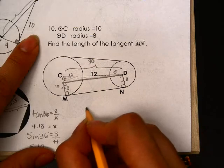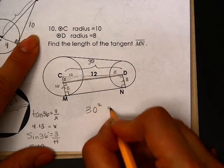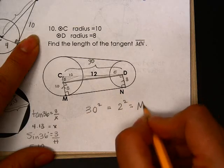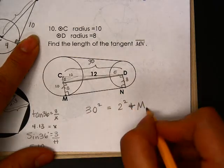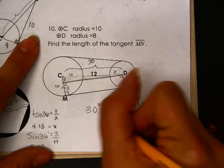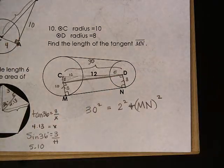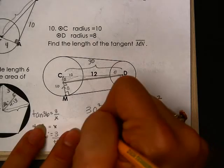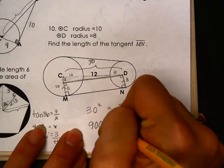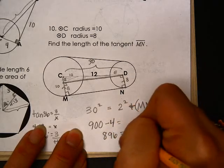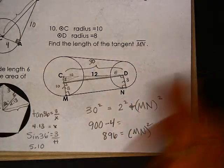So I've got my hypotenuse of 30 squared. And I have this little section here, 2 squared. And I am looking for MN squared. So I do my little math here. And 30 squared is 900. Good. So 900 minus 4, so 896 is equal to MN squared.